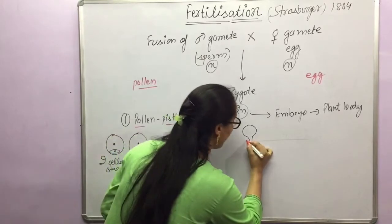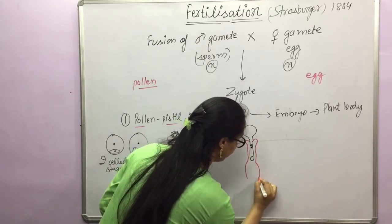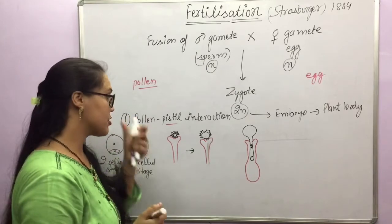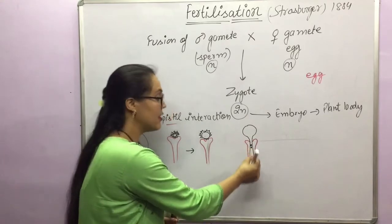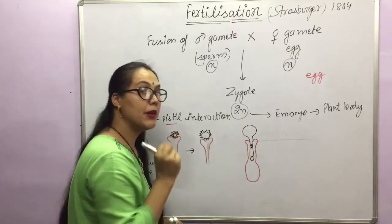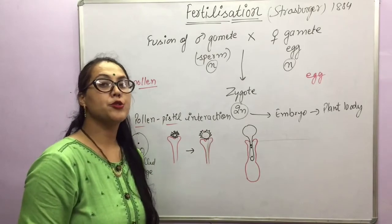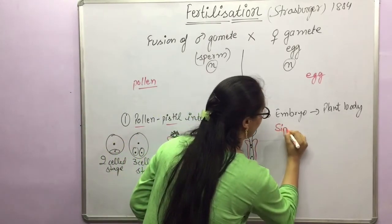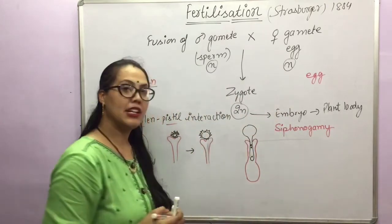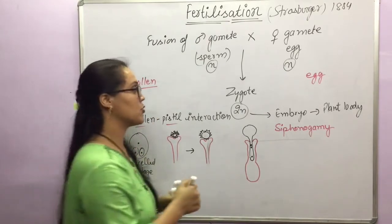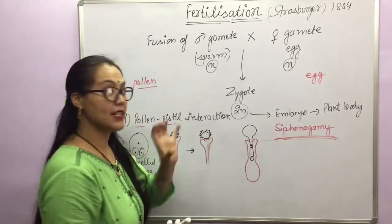All these stages are happening on top of the stigma. So in angiosperms, we see that there is a pollen tube forming to transfer the male gamete from the pollen grain to the ovary — and inside the ovary, the male gamete has to go into the ovule. This type of fertilization, where the male gamete is delivered to the egg with the help of a pollen tube, is known as siphonogamy.